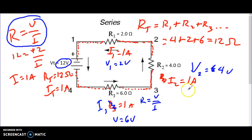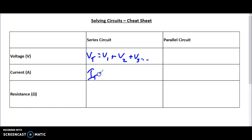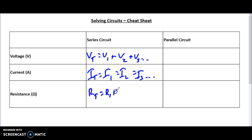At this point, I'd pull out the cheat sheet from the website. What we've just done is looked at a series circuit. You'll see that the voltage total equals V1 plus V2 plus V3 and so on. The current total equals the current at spot 1, which is also the same as current at spot 2, and so on. And resistance: RT equals R1 plus R2 plus R3, and so on. That's the logic behind a series circuit.